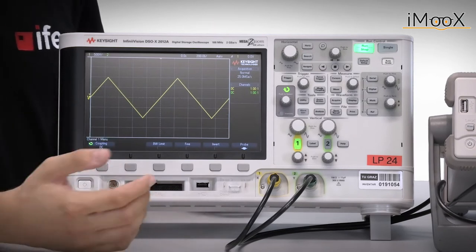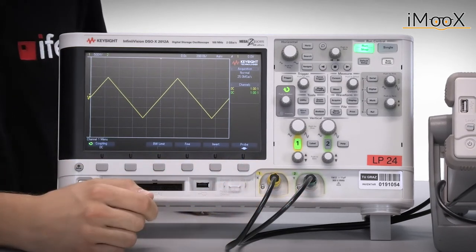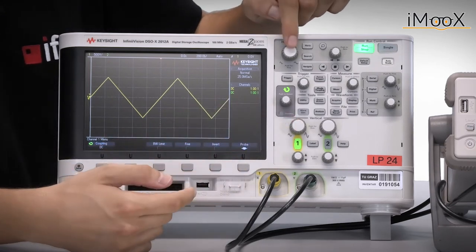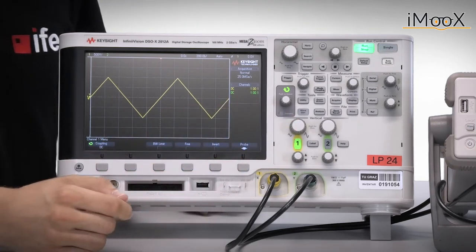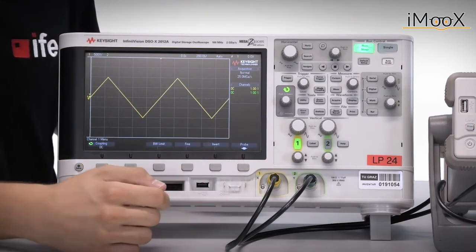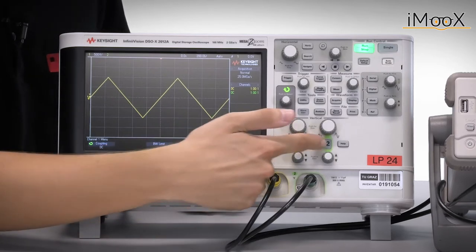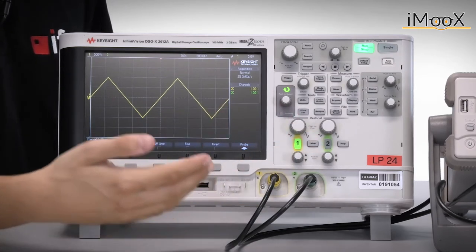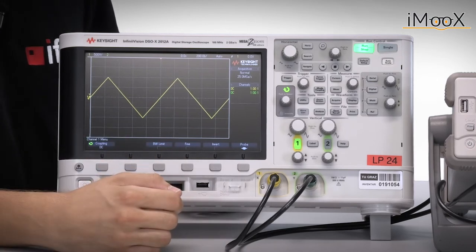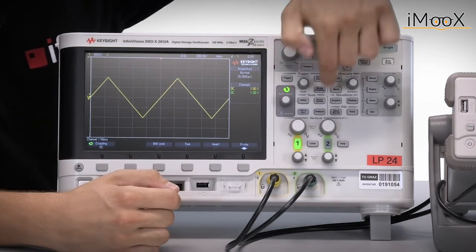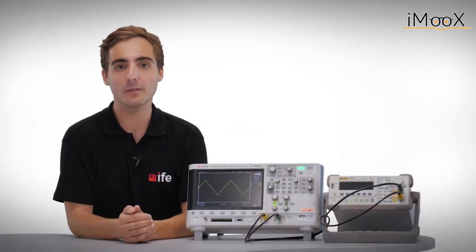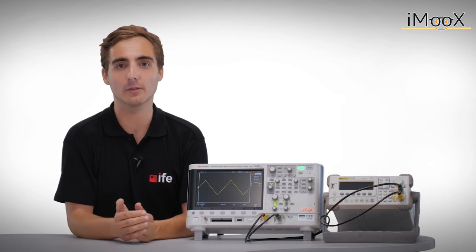The most important ones are the analog input channels, the knobs for scaling vertical and horizontal axis, the knobs for setting the offset of vertical and horizontal axis, the buttons for enabling and disabling the channels. And as you see, channel 1 is enabled, and the trigger setting panel. I will explain all of these in detail in the course of the video.